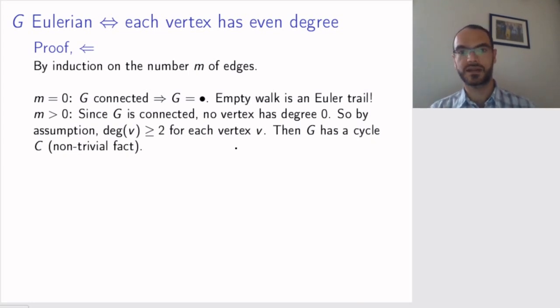Now comes a non-trivial fact that we'll deal with later. But believe me for the moment, any graph where the degree of each vertex is at least two will have a cycle. So since in our graph, the degree of each vertex is at least two, the graph contains a cycle.